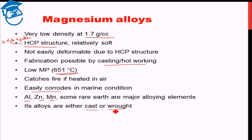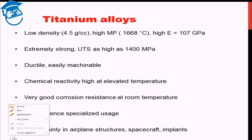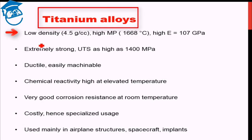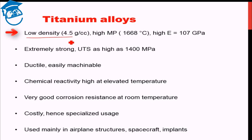Now let us look at titanium alloys. Titanium has a low density relative to iron — not as low as aluminium or magnesium — with a density of 4.5 gram per cubic centimeter. Contrary to aluminium and magnesium, which had very low melting points, the melting point of titanium is quite high at 1668 degrees Celsius, which is even higher than iron.